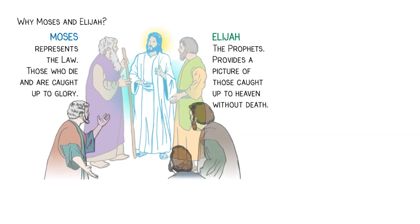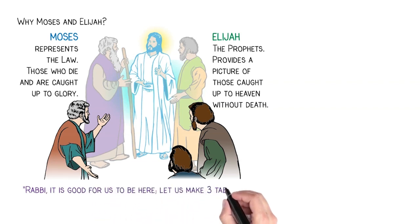Peter didn't know what to say, so he blurted out, Rabbi, it is good for us to be here. Let us make three tabernacles, one for you, and one for Moses, and one for Elijah.